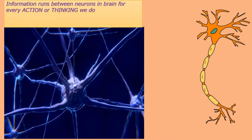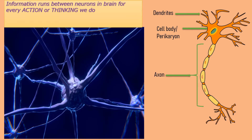The neuron contains three main parts. First is the cell body, or the perikaryon, which contains the nucleus. Second is the short process called the dendrites. Third is the long structure or process called the axon, which ends at the nerve ending. Information is transmitted in the neuron through electrochemical impulses, traveling from dendrites to cell body, cell body to axon, and axon to nerve ending.